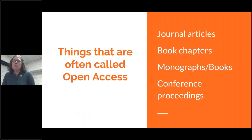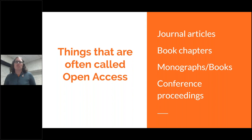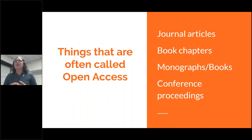Things that are often called open access include journal articles, book chapters, monographs or books, and conference proceedings — the more typical traditional scholarly outputs that were once available in print but can now be made available online. Many times these are published behind a subscription paywall, but when they're open access, it means they're free for anybody to read, retain, reuse, build upon, etc.